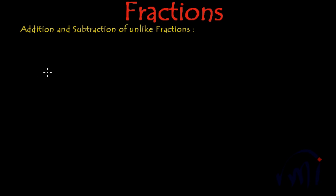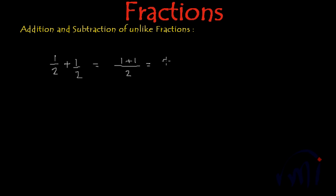So when we were supposed to add 1 by 2 and 1 by 2, what we were doing? We were writing the denominator as it is and we were adding the numerators. So this was giving us 2 by 2, or 1 whole.